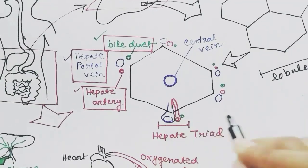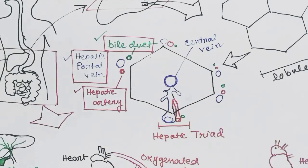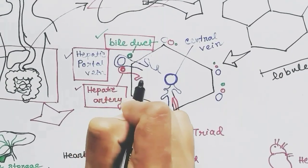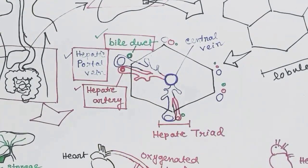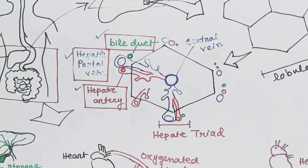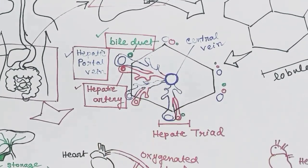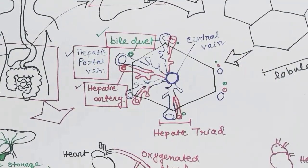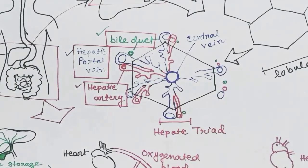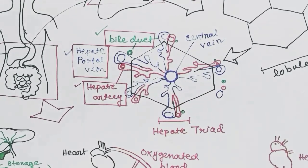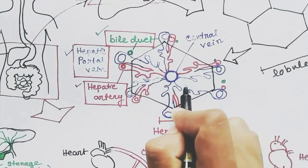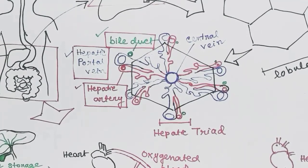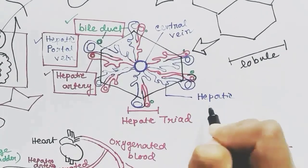Both the hepatic artery and the hepatic portal vein will run through the hepatocytes, or hepatic cells, and meet the central vein. During this passage, they form a longer passage for diffusion of nutrients and oxygen to the cells of the liver. This longer passage gives more opportunity for the cells to receive nutrients and oxygen. These channels or capillaries are called sinusoids, or hepatic sinusoids.